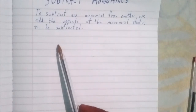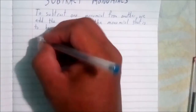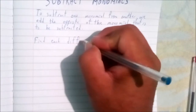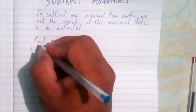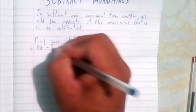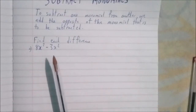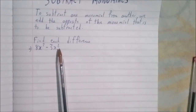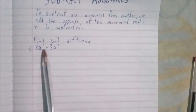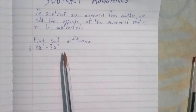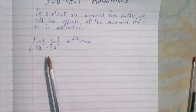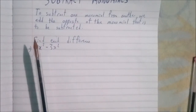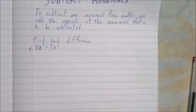For example, find the difference — that simply means to subtract. Here we have 8x² minus 3x². We need to note that the terms have the same variables with the same exponent — both are to the second power — so they are like terms. We will combine their coefficients, the 8 and the negative 3, and keep the same variable x².